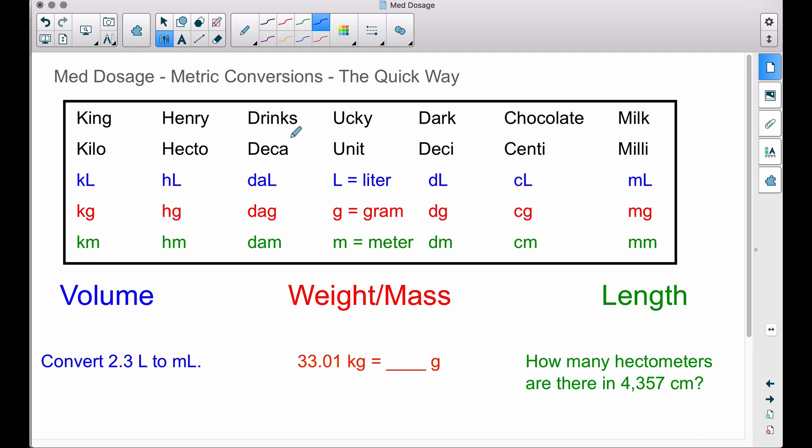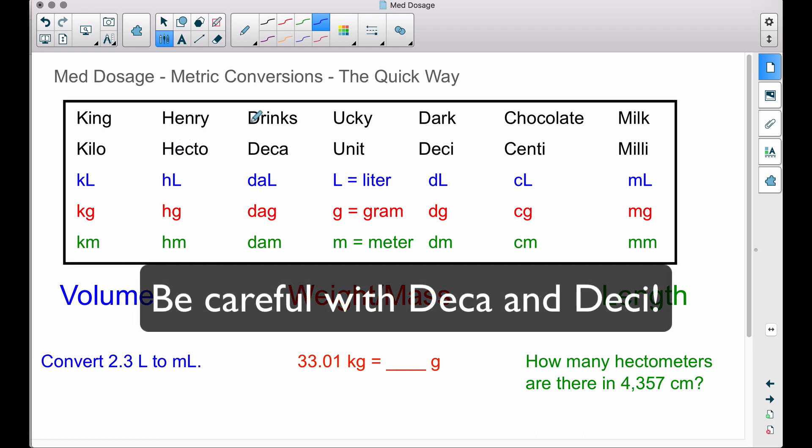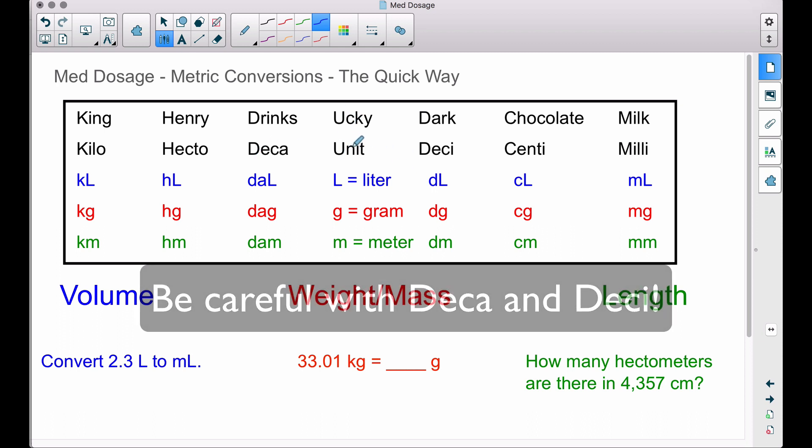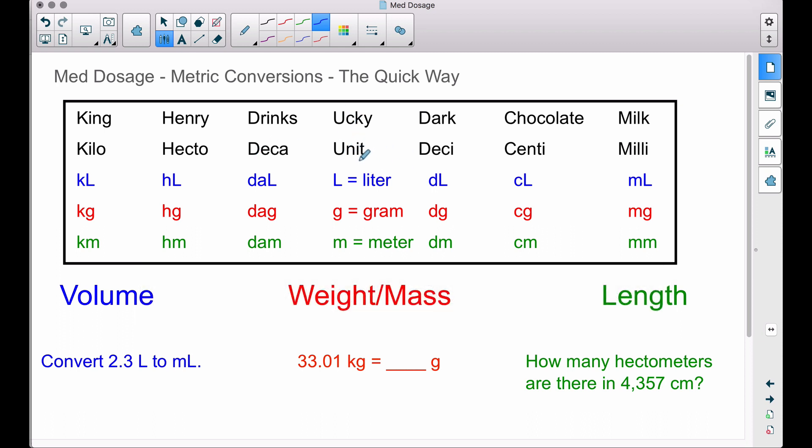So K - kilo, H - hecto, D - deca, unit. And the unit, let's talk about the unit. The unit is a liter, a gram, a meter. And all we have to do is move our decimal according to this King Henry thing. For example, this first one down here: volume.